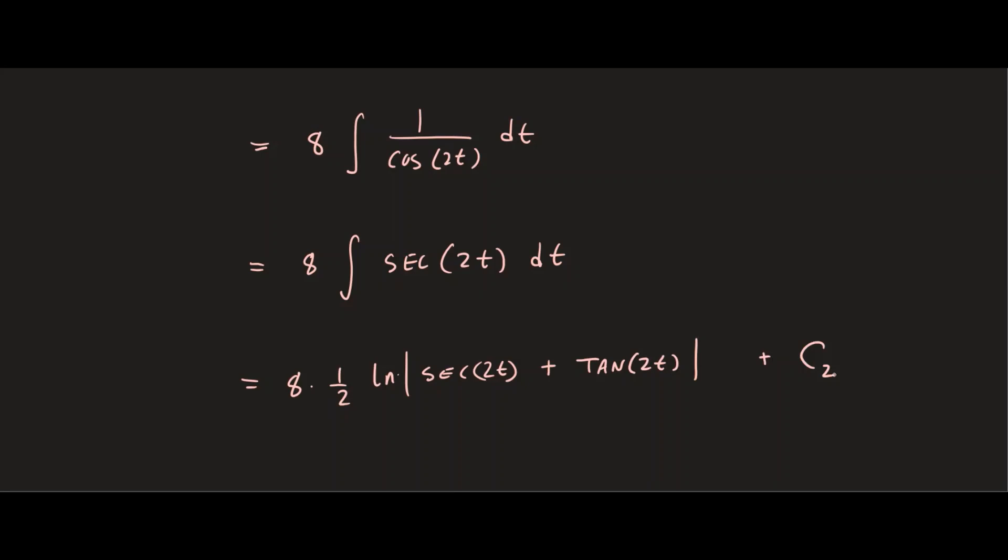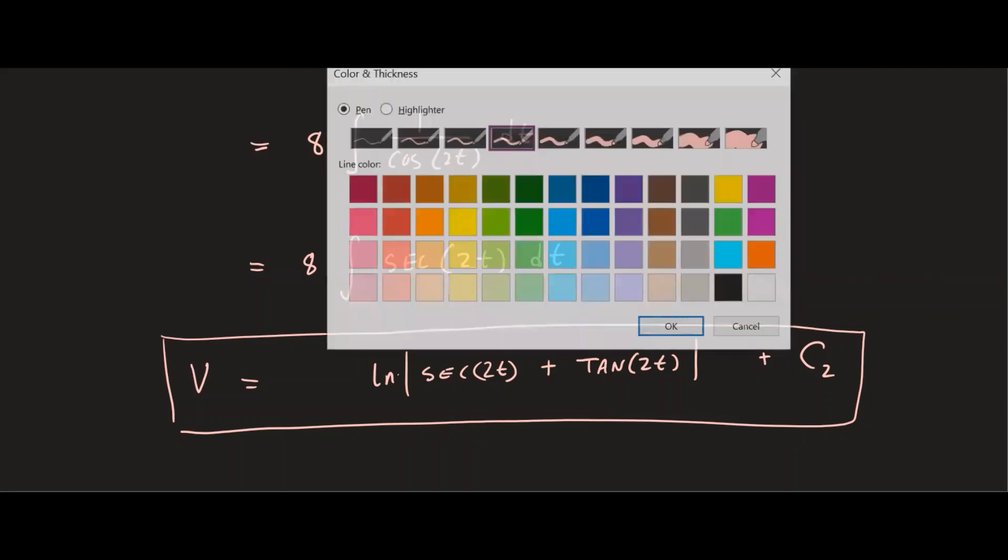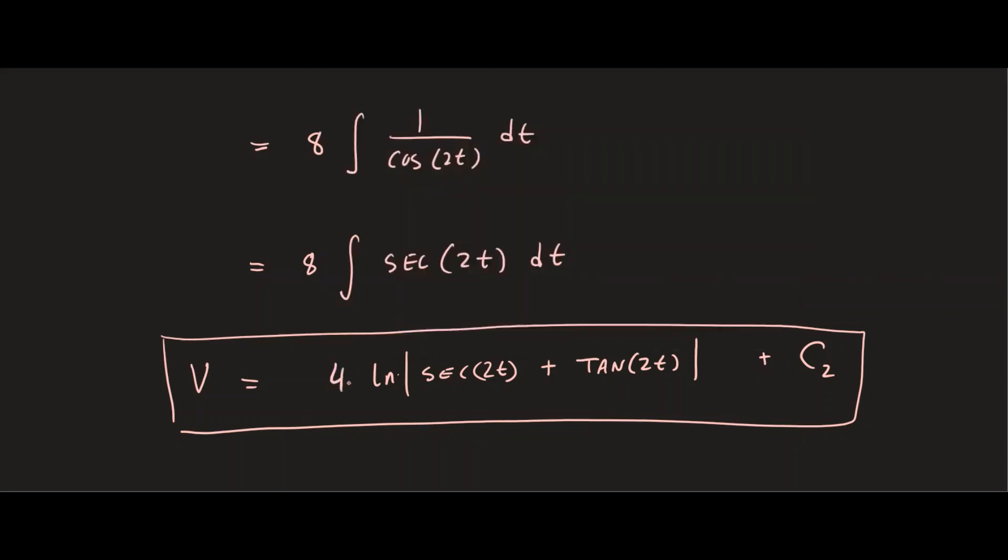So that's straight coming from calculus knowledge, and we add a constant of c2. So if you need to review how to integrate secant of x, please do that. That way the integration becomes simpler when you're doing these type of problems. So this is the expression we have now for v. And of course, I can write 8 over 2 as just 4.